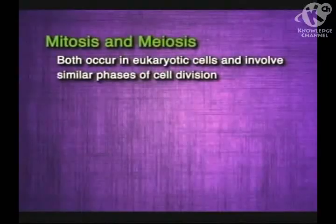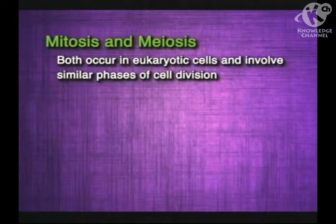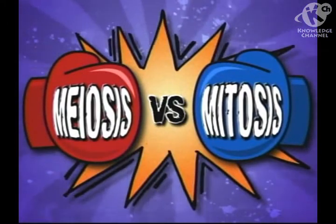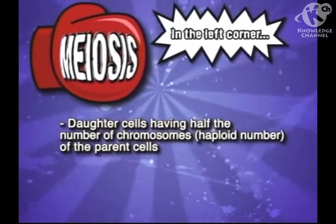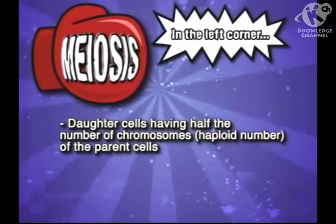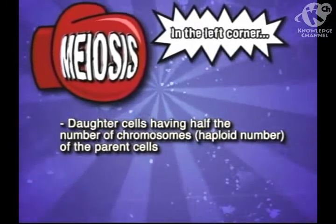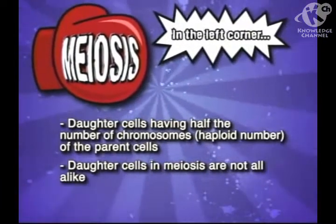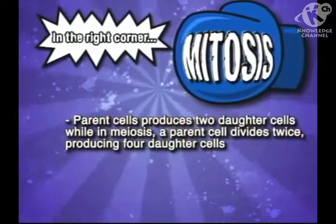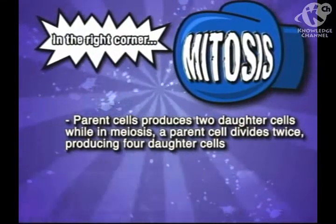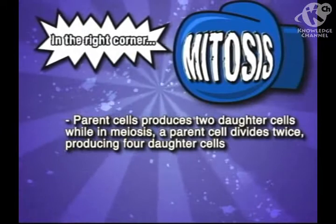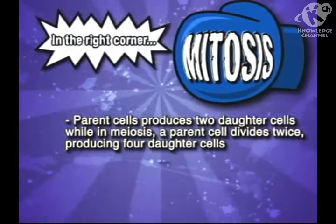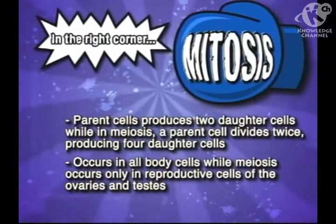Meiosis is also a type of cell division like mitosis. Meiosis is similar to mitosis in many ways — both occur in eukaryotic cells and they have similar phases of cell division. But the two processes differ in the following ways: One, meiosis results in the daughter cells having half the number of chromosomes — the haploid number — of the parent cell. Two, the resulting daughter cells in meiosis are not all alike; they do not have exact copies of the chromosomes. Three, in mitosis a parent cell produces two daughter cells, while in meiosis a parent cell divides twice, producing four daughter cells. Four, mitosis occurs in all body cells, while meiosis occurs only in the reproductive cells of the ovaries and testes.